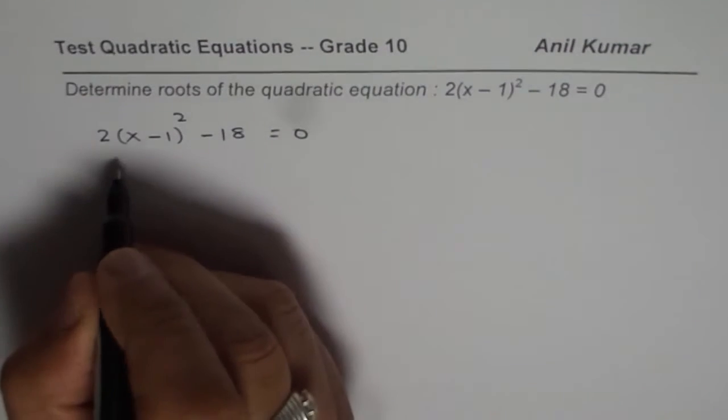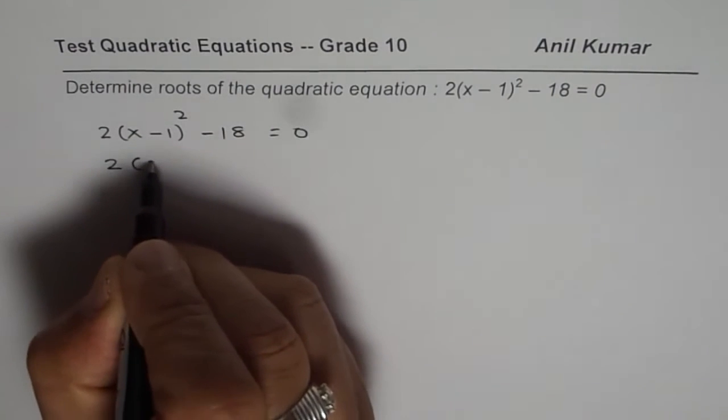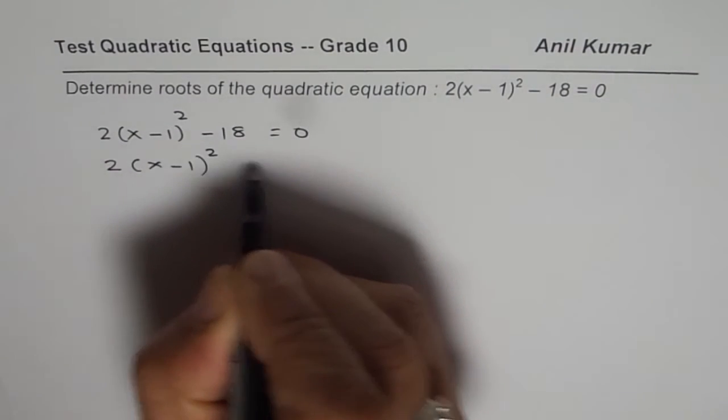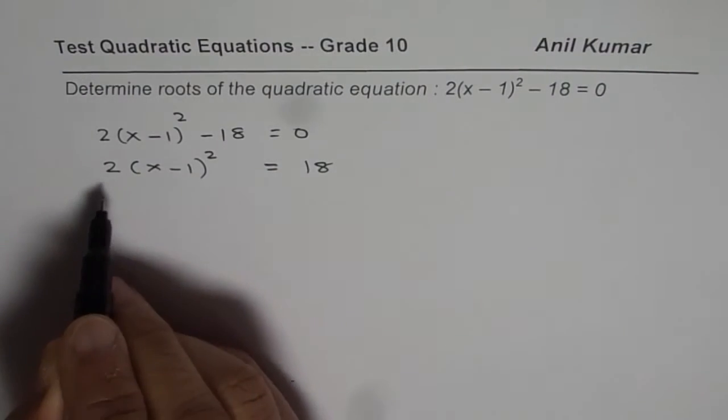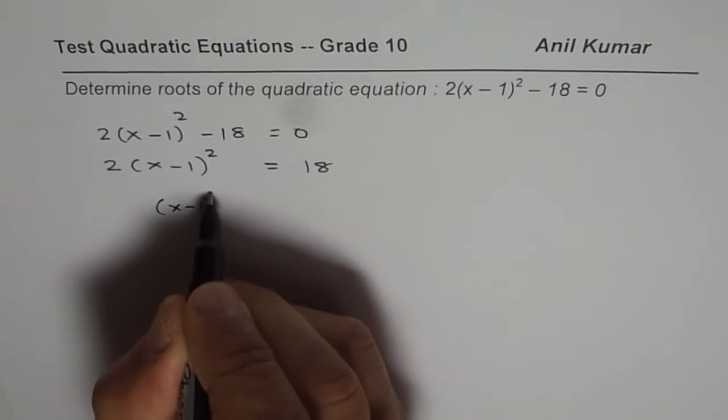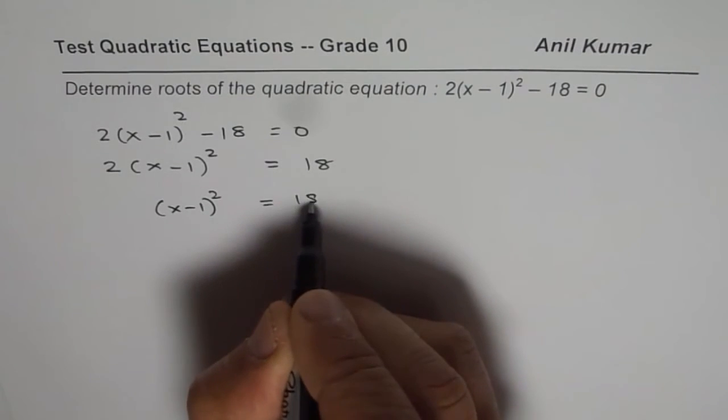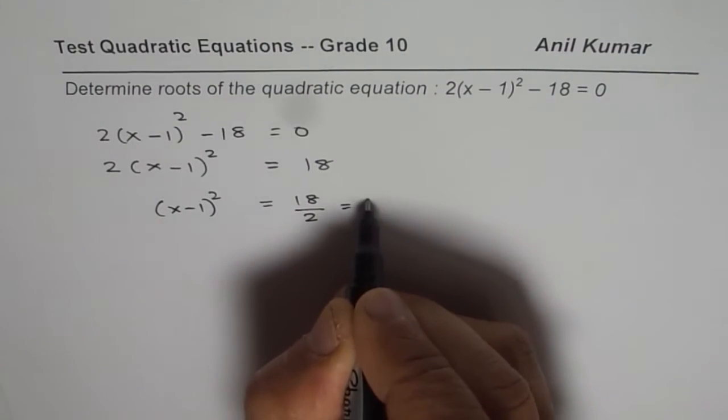So first step, 18 on the other side. So we have 2 x minus 1 whole square equals to 18. So add 18 both sides. Now divide by 2. So we get x minus 1 whole square equals to 18 divided by 2, which is 9.